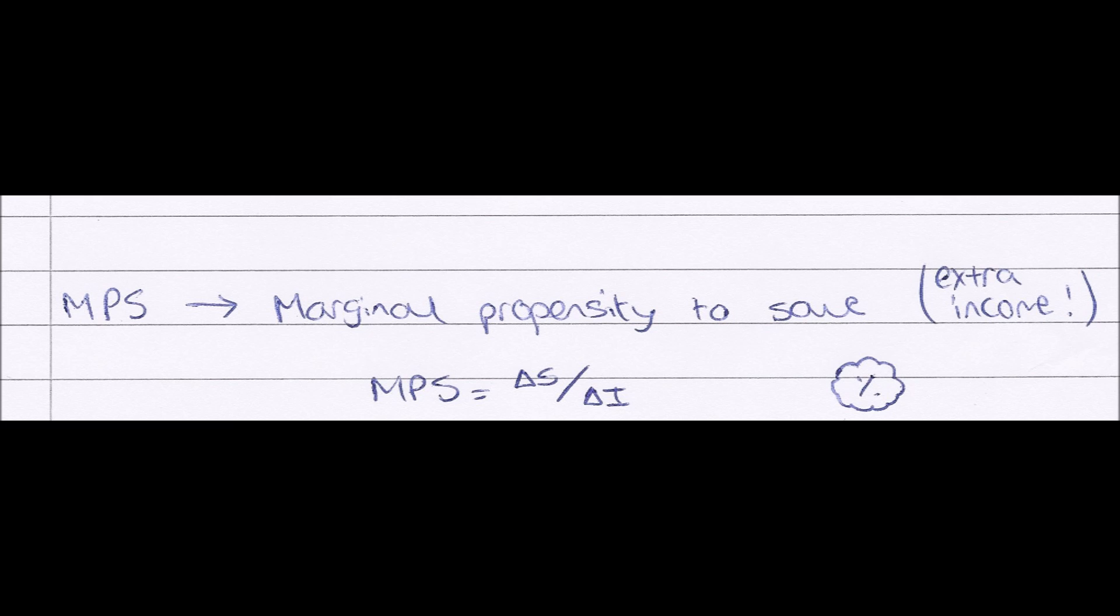And finally, we have the MPS, or marginal propensity to save. This again is similar to MPC, but is in terms of saving. So this is how much of our extra income we will save.